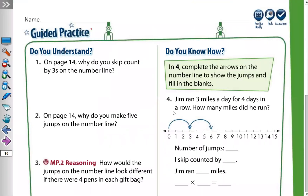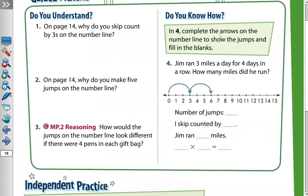Let's move to the next page. Complete the arrows on the number line to show the jumps and fill in the blanks. Jim ran three miles a day for four days in a row. How many miles did he run? He ran three miles each day. We skip count by three from zero, and since it's four days, he will do four jumps of three.